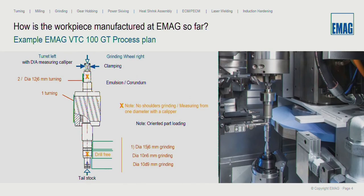In the past, the machining of shafts with this special surface requirement was mainly done with grinding technology. Here you see a process plan EMAC used in the past. You see here our VTC 100 GT as a combined machining solution — on the left side a turret, on the right side a grinding wheel. We had projects where we used the turret for diameter machining and the grinding wheel for scroll free diameters, depending on the tolerance. Today we are able to machine this kind of surface requirement with a turning process.